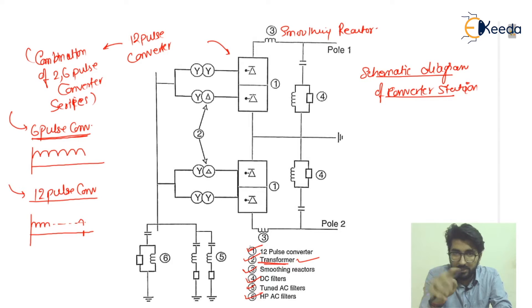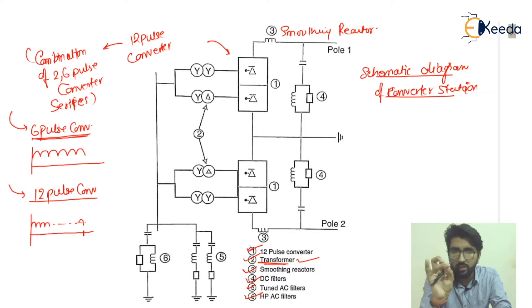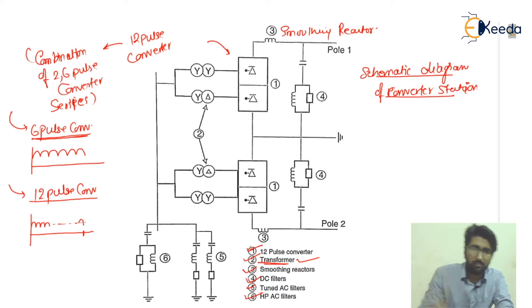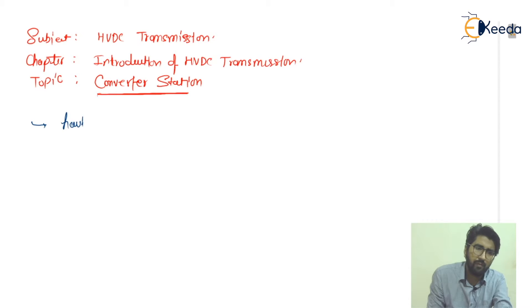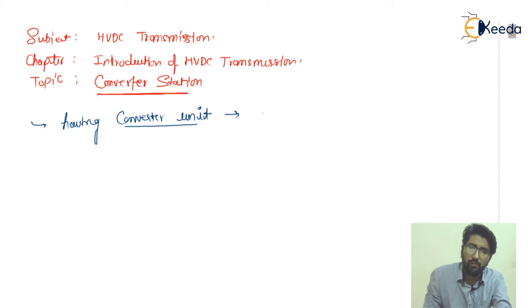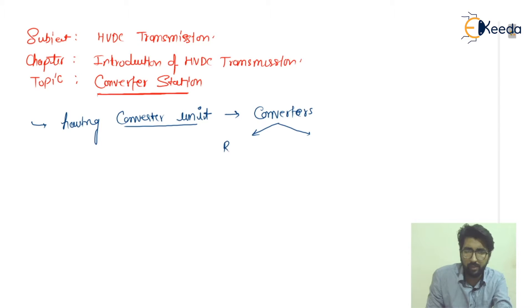To summarize, these components together form the converter station, which consists of the converter transformer, smoothing reactor, filters, and the 12-pulse converter. The converter unit contains converters which may behave as a rectifier or as an inverter.